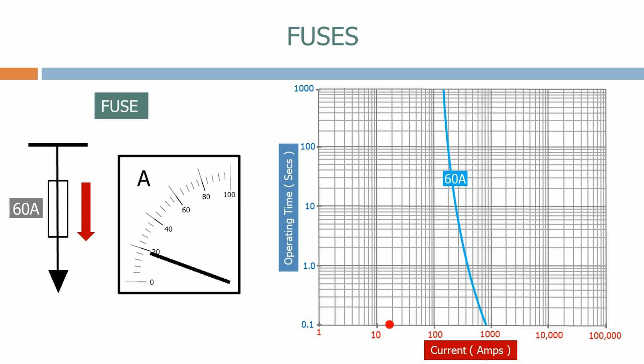During normal operation, the value of the current on the feeder will continuously vary as the load varies. During the normal operating range, the fuse will pass the current through it and not react. Therefore, this part of the fuse characteristic is called the no trip zone.